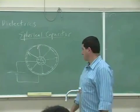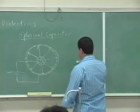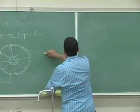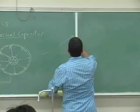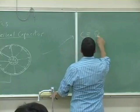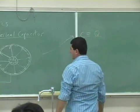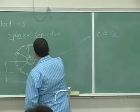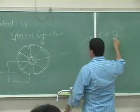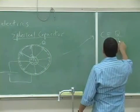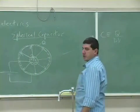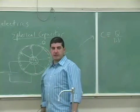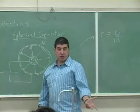The capacitance is going to equal, by definition, the charge of one plate — so this is Q and this is negative Q — the charge of the inner plate divided by the potential difference between them. And the potential difference between them is negative the integral.